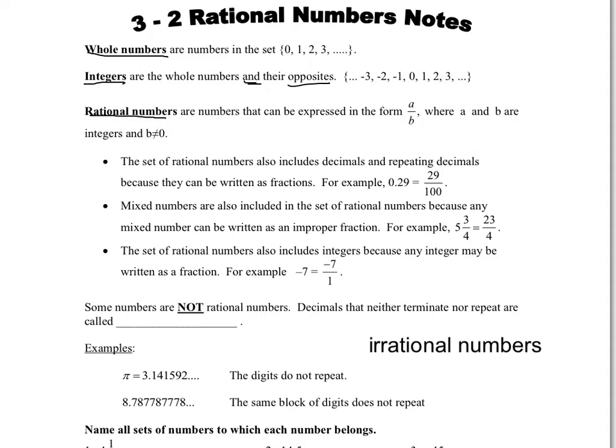So rational numbers include decimals and repeating decimals because they can be written as fractions. For example, 0.29 can be written as 29 over 100. Mixed numbers are also included in the set of rational numbers because any mixed number can be written as an improper fraction.